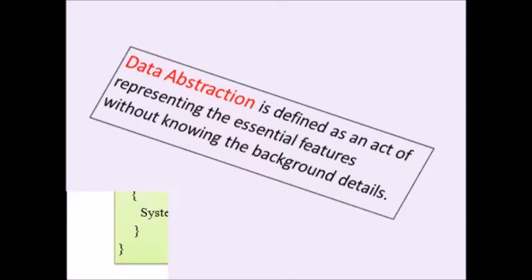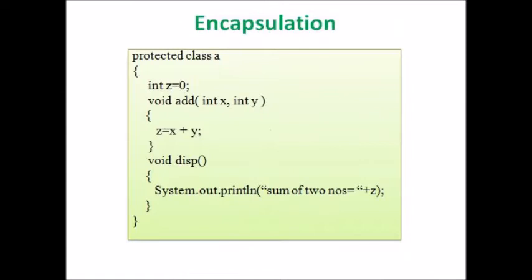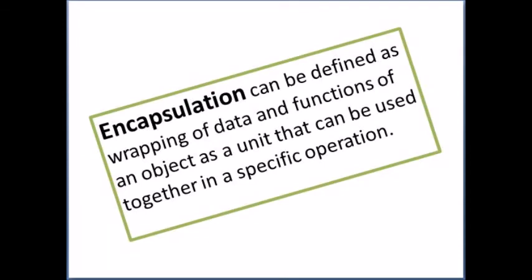Another principle of OOP is encapsulation. In OOP, the data and functions are grouped and merged together in such a way that the data items are only accessible within the function of the same object. In this given example, none of the members of the class can be accessed outside class A because it has a private access specifier. But if the same class has a protected access specifier, then only the child class can access the members of class A. Hence, encapsulation is defined as a process of wrapping the data and functions into a single unit. Only the private and protected access specifiers define encapsulation.